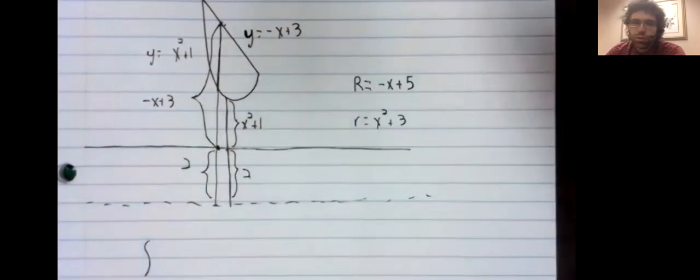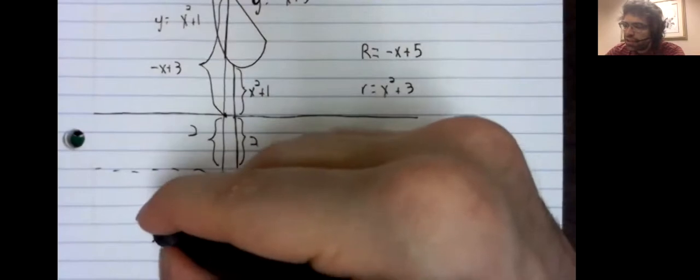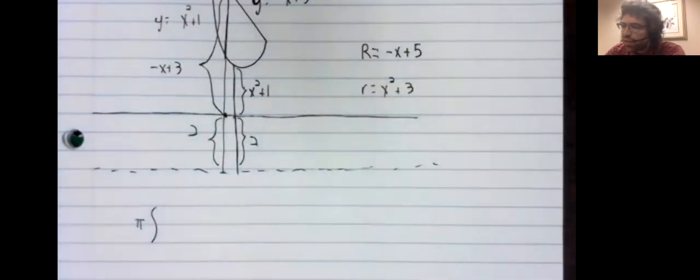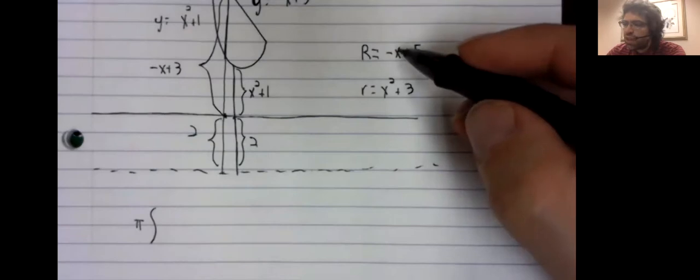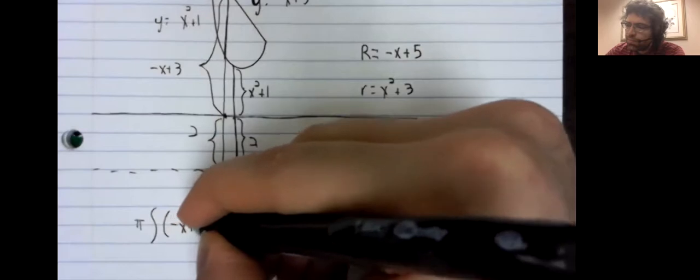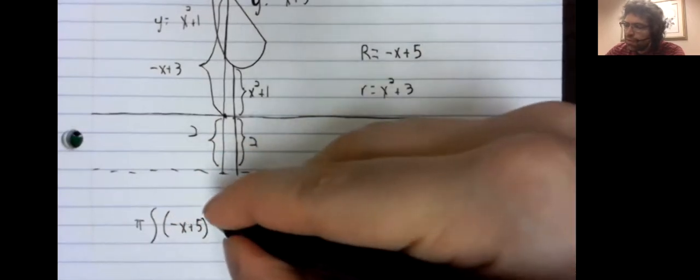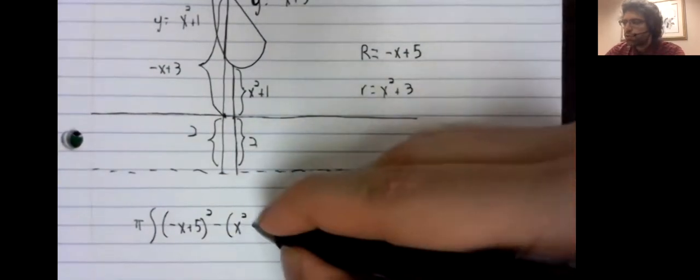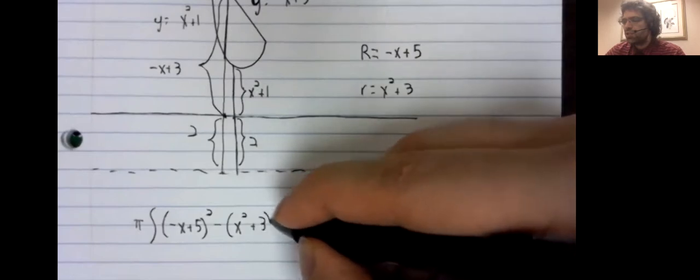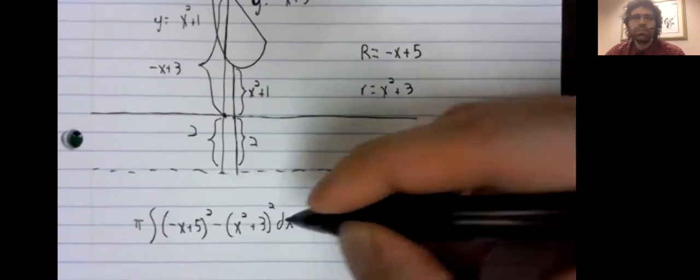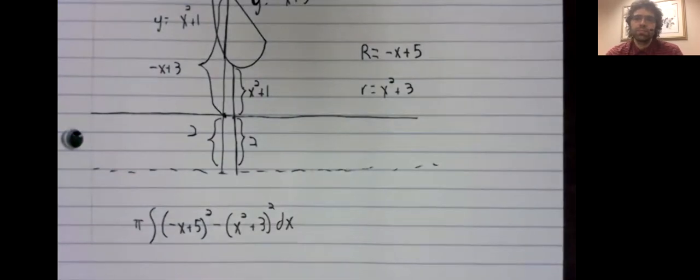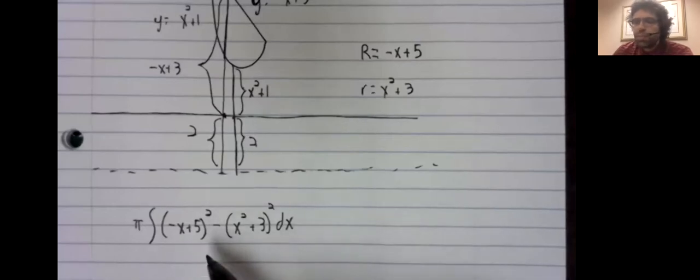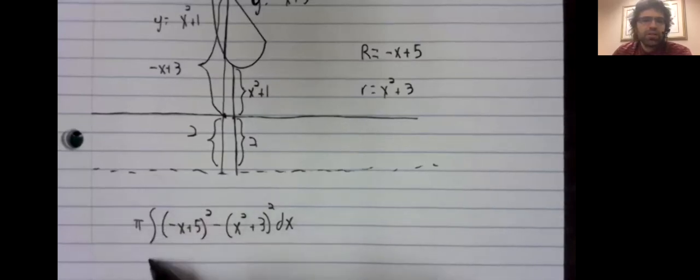The integral we're almost ready to completely set up. It's the outer radius squared minus the inner radius squared. And we'll simplify that. But first, limits of integration.